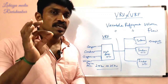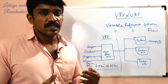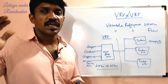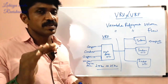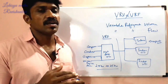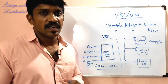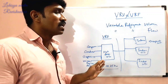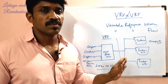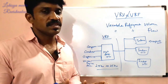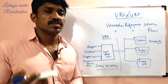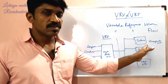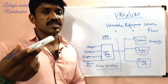This is the variable flow concept. When demand changes, the compressor speed changes accordingly — for example, from 1000 RPM down to 600 RPM — adjusting the refrigerant flow to match the required load at any given time.